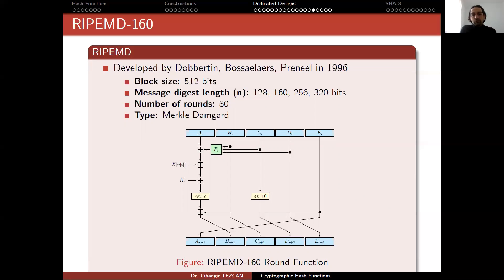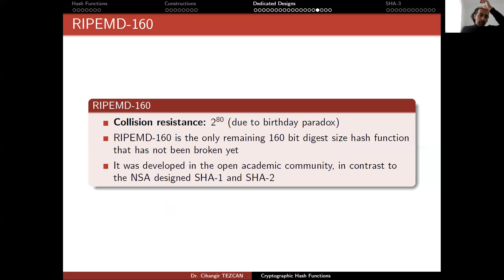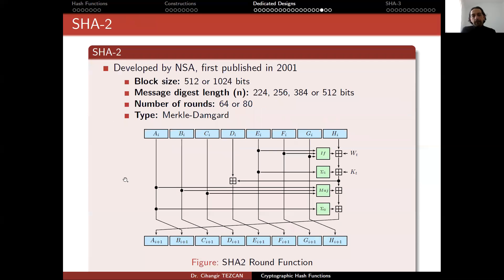Currently, a hash function that is not broken and a hash output of size 160 bits that's still secure and designed by academicians is RIPE-MD 160. For some reason, if you don't want to use an algorithm designed by NSA and you want a small hash output, then you can use RIPE-MD. The picture is very similar. It is again Merkle-Damgard construction. The rotation numbers are different, but the number of rounds is the same. Currently, nobody found a better attack than birthday paradox. RIPE-MD 160 is the only remaining 160-bit digest size hash function that has not been broken yet, to the best of our knowledge. It was developed in the open academic community in contrast to the NSA design SHA-1 and SHA-2.